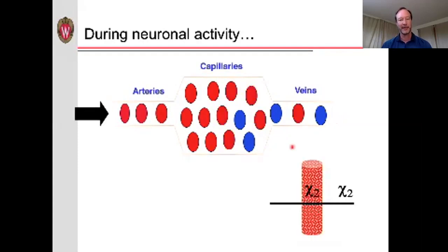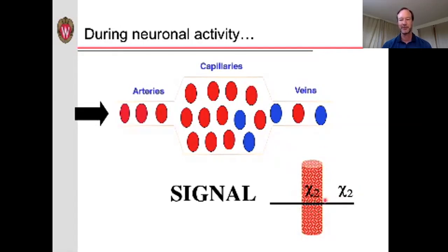During neuronal activity, it turns out the blood flow actually increases so much that it pushes out the deoxygenated blood, and we actually have an increase in oxygenation within the tissue. As a result, the differences in magnetic susceptibility with the surrounding tissue decrease, and as a result, we have an increase in the MRI signal.